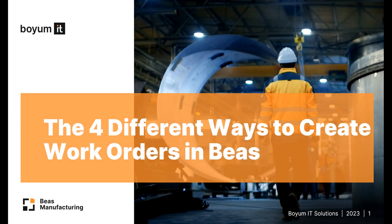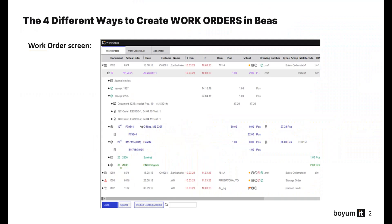Hello and welcome. In this video, I'm going to demonstrate to you four different ways to create a work order. The work order screen is the central window for managing all production functions. Apart from this, however, there are more possibilities to create work orders. In this short video, I'm going to show you these four different ways to do so.